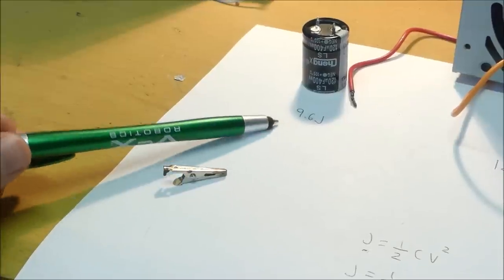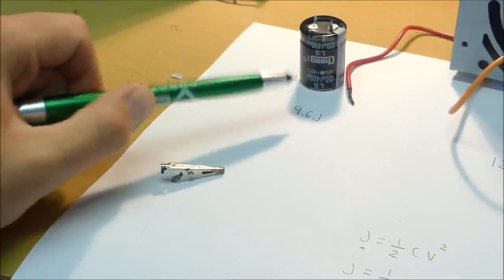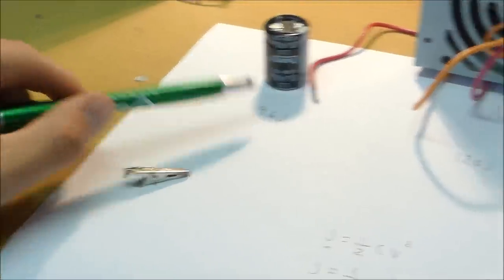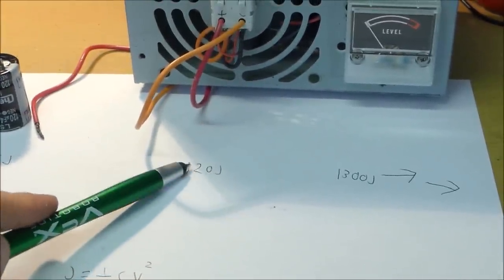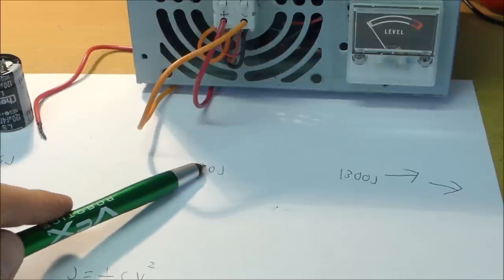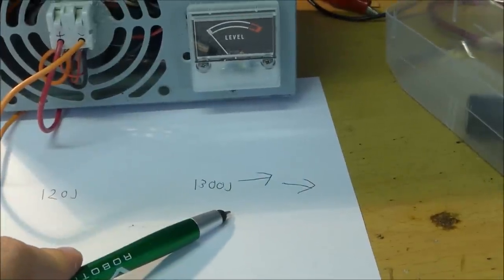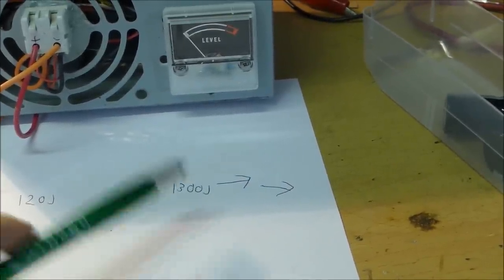Let's do some quick comparisons here. We've got this small capacitor with an energy storage of 9.6 joules, this bigger capacitor bank with an energy storage of 120 joules, and my gigantic capacitor bank with an energy storage of 1.3 kilojoules.